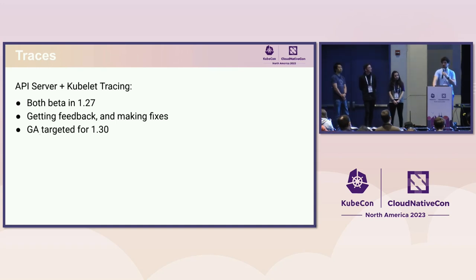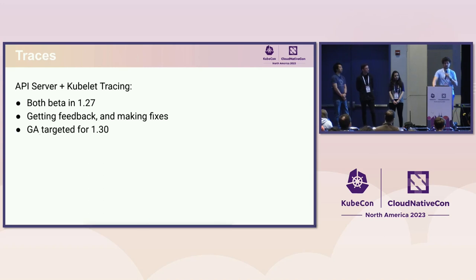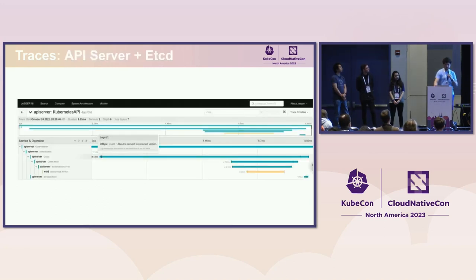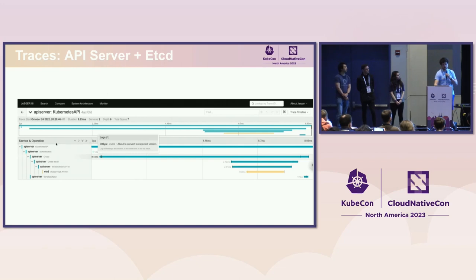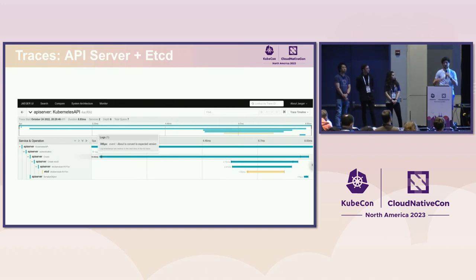To give you an example of what this looks like: this is an example of an API server trace, and you can see the etcd span in there along with an authentication span, so you can see the breakdown of where it's spending time on requests. If there was something wrong, this would be very useful for identifying exactly where in the API server or etcd the problem likely lies. Same thing with the kubelet — if you create a pod and that trace is sampled, you'll get a view showing the breakdown of pulling the object, creating the sandbox, starting the containers, etc. Really helpful especially when optimizing for fast pod startup.